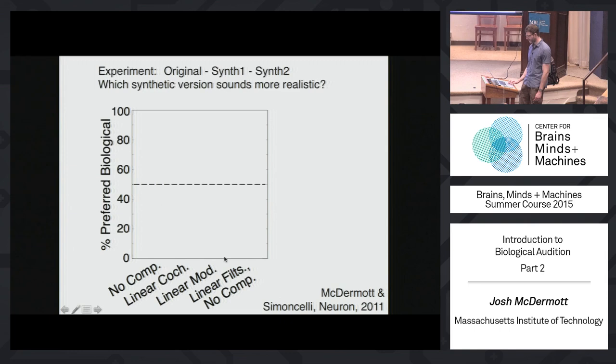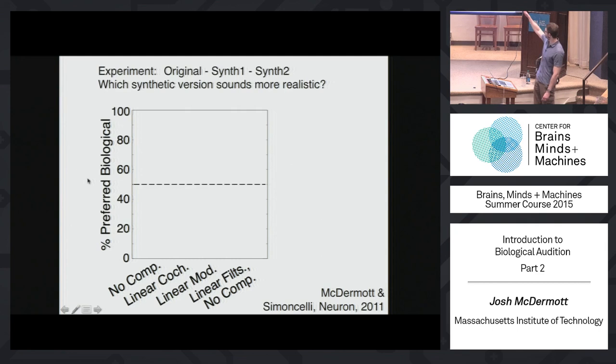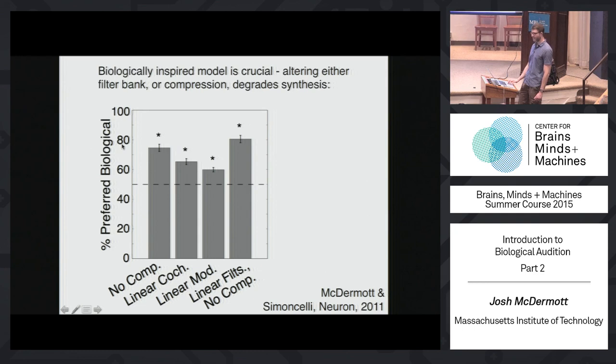There were four conditions in this experiment because we could alter the models in three different ways: we could get rid of amplitude compression, make the cochlea linearly spaced, make the modulation filters linearly spaced, or do all three. What's plotted on the axis is the proportion of trials on which people said that the synthesis from the biologically-plausible model was more realistic. In every case, people report that the synthesis from the biologically-plausible model is more realistic.